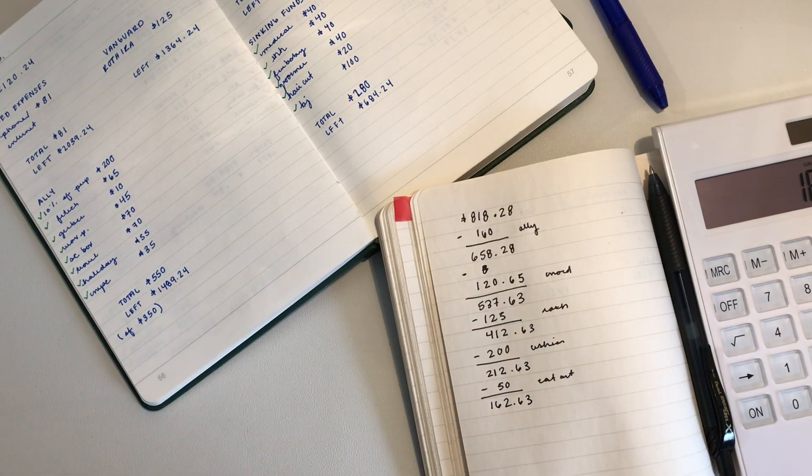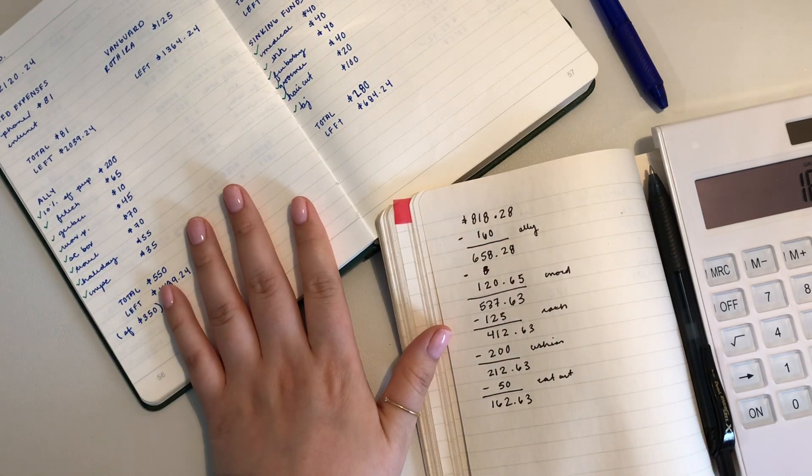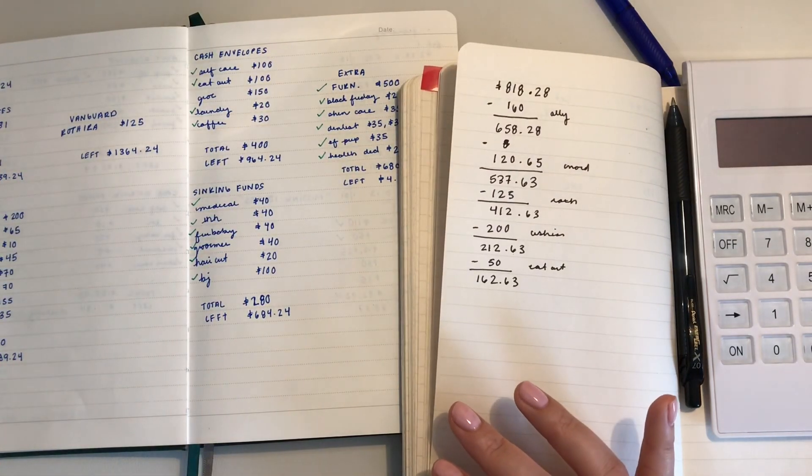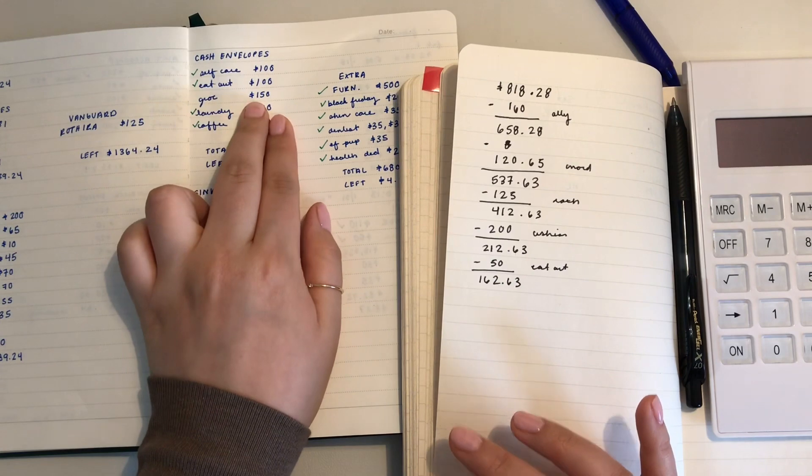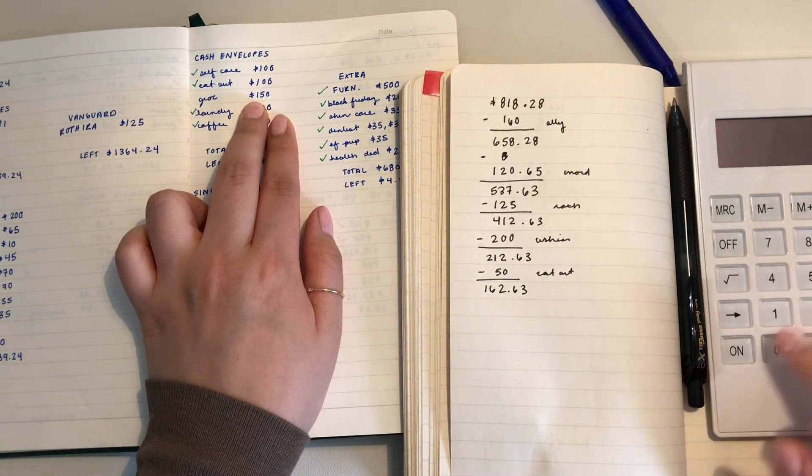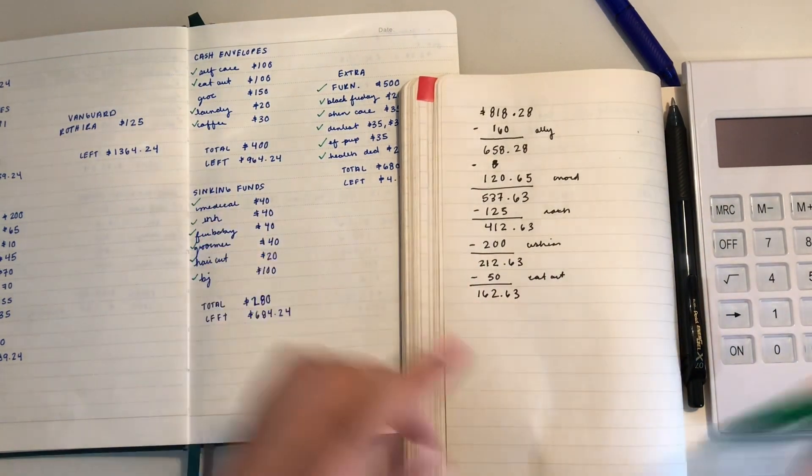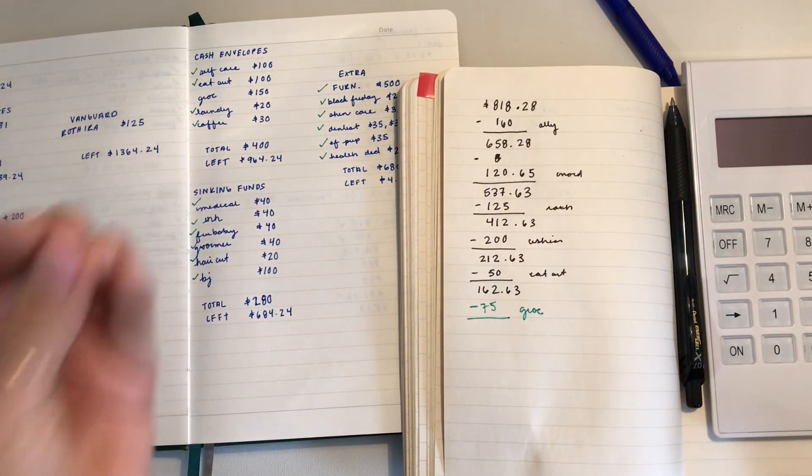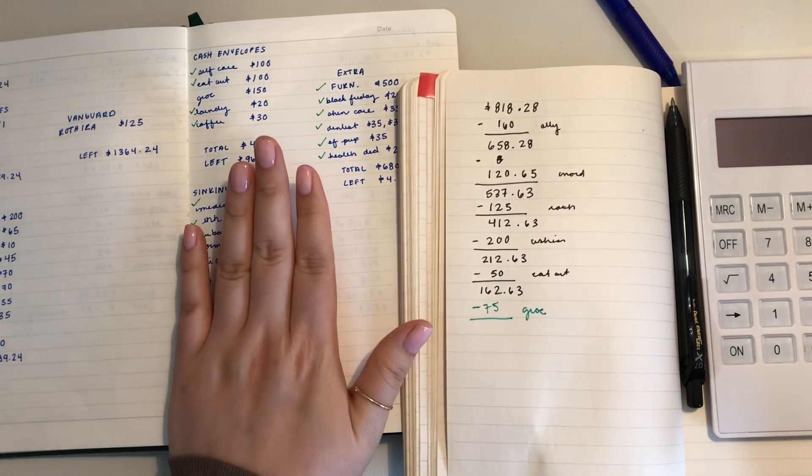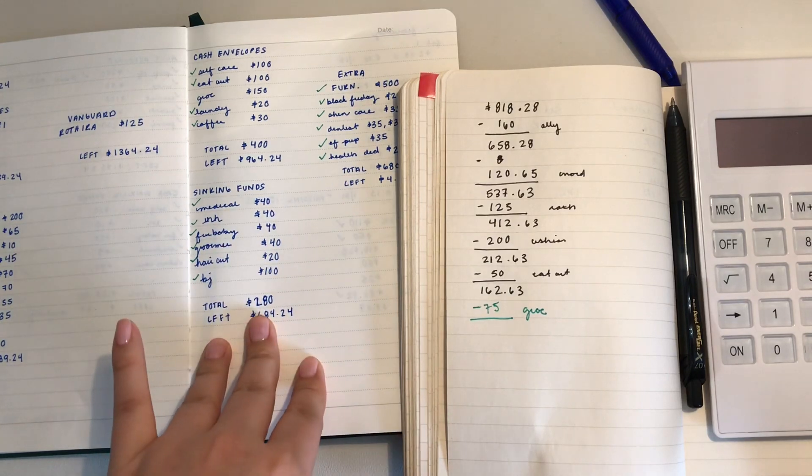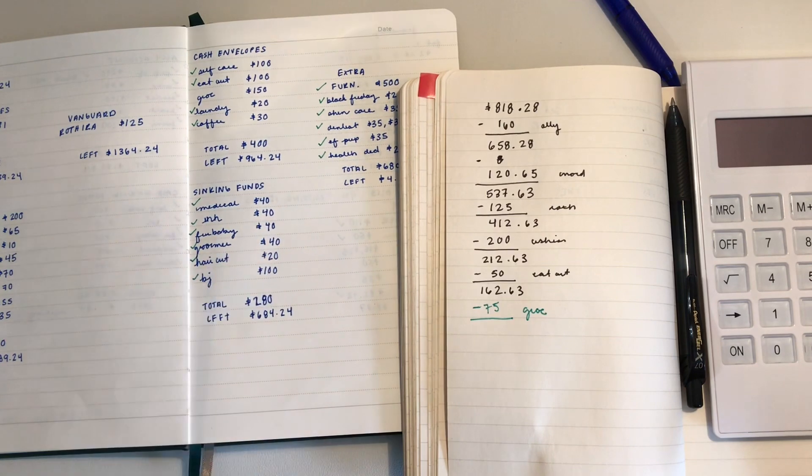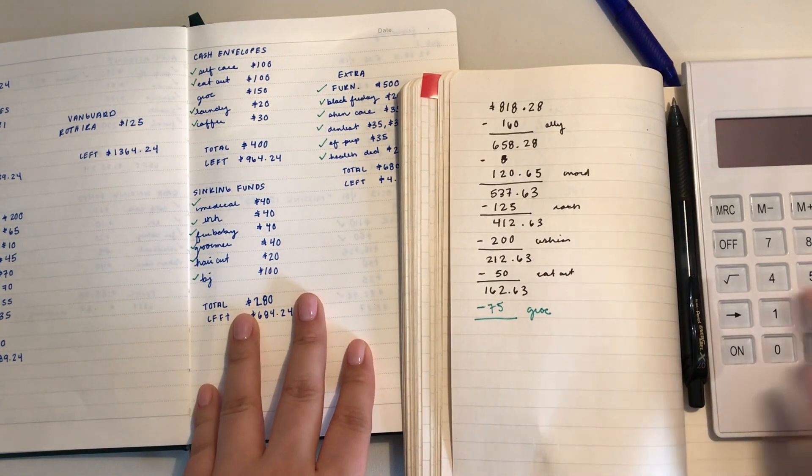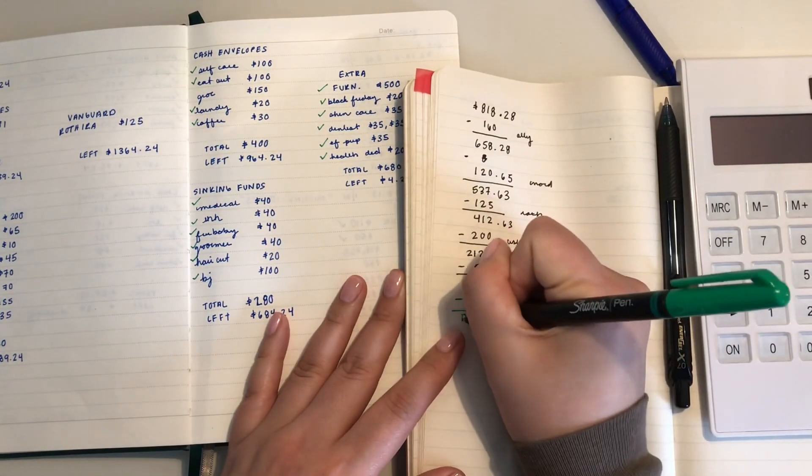I was supposed to have more than this for my groceries, but I paid off my credit card like an idiot. $150 is for two weeks, so I'm going to just budget out another $75. $162.63 minus $75, that leaves me with $87.63.